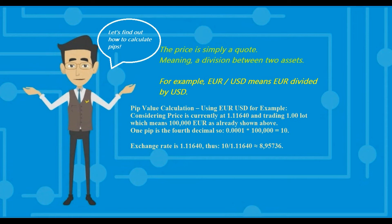You should know that a price is simply a quote — a division between two assets. For example, EURUSD means EUR divided by USD, where EUR is the base currency. This is also good to know when there is news: if one asset gets stronger due to news and another gets weaker, you would know the likely direction. Because it's a quote — a division — if the base currency gets stronger, you're dividing a bigger number by a smaller number, which means the quote is going to get bigger.